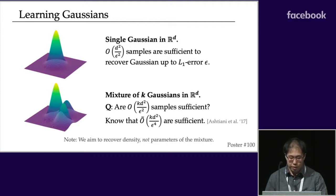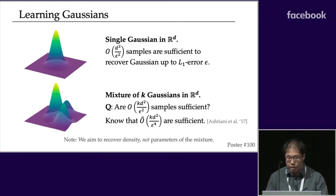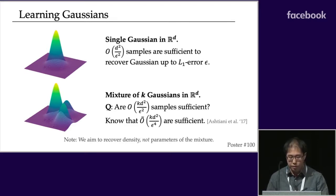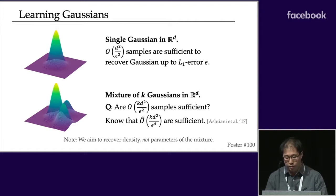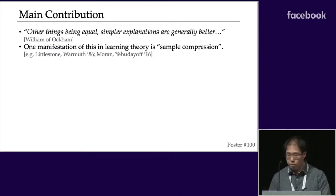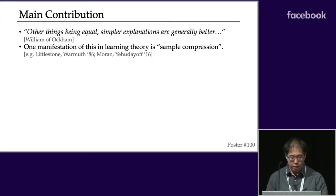What about mixtures of K Gaussians? There are KD² parameters, so the naive guess is that KD² / ε² samples should suffice. Prior to our work this remained unresolved. Previous work by my co-authors got close to this bound but had a suboptimal factor of 1/ε³. Motivated by this gap, the main goal of this work is to introduce a new technique for density estimation.